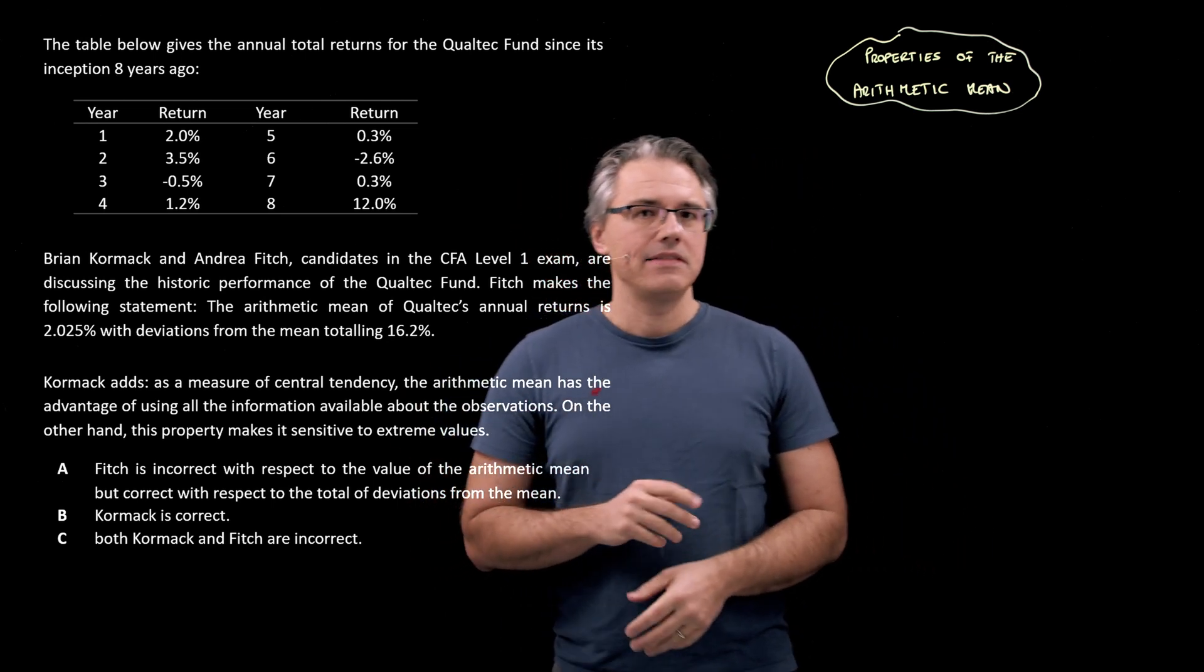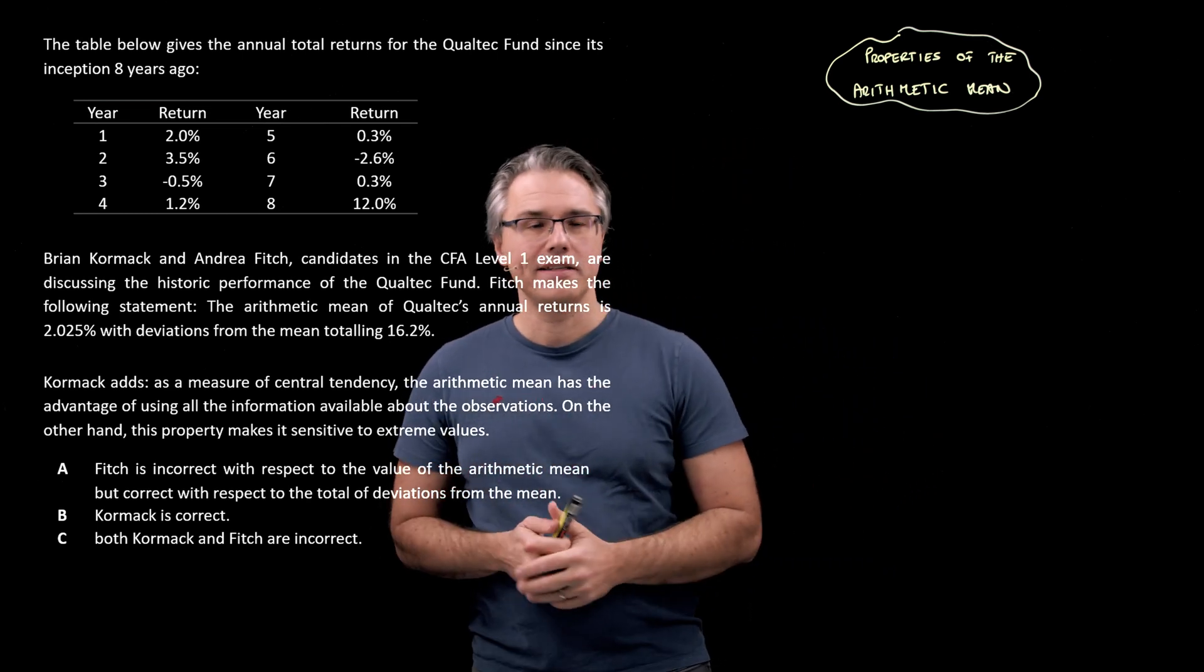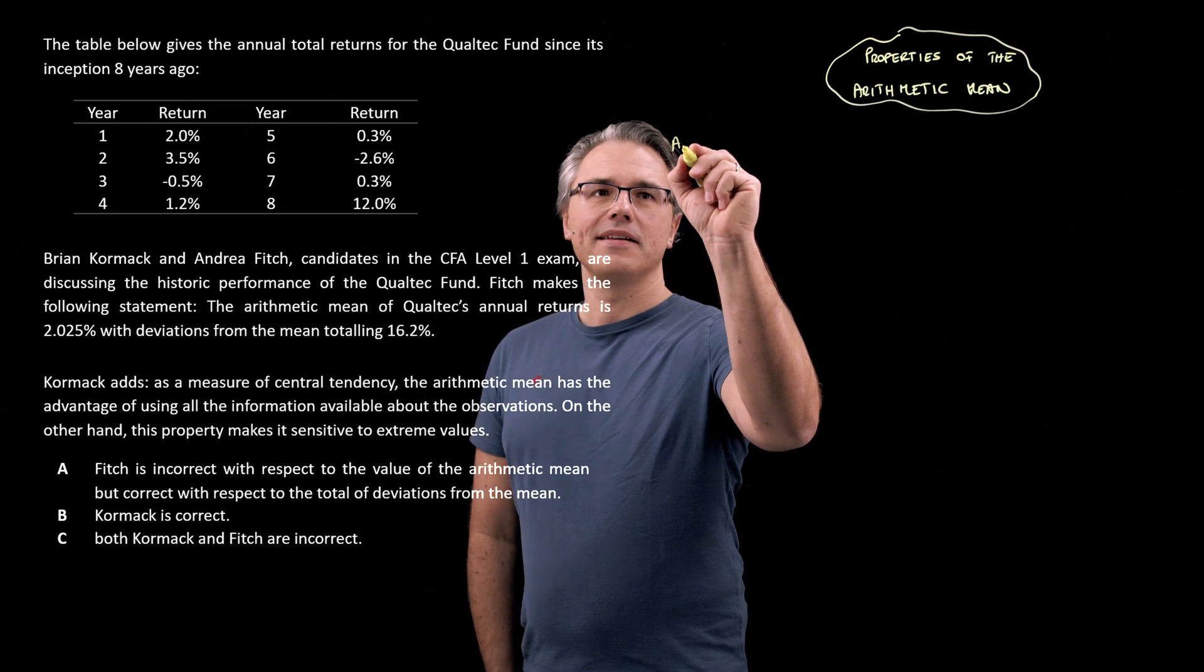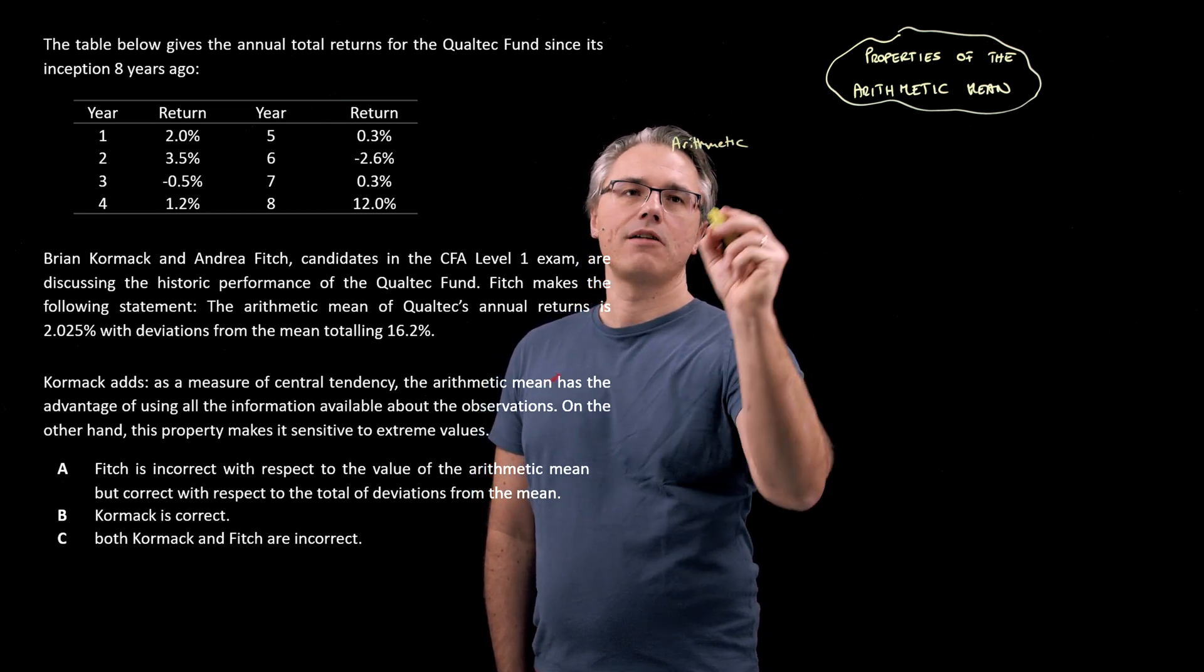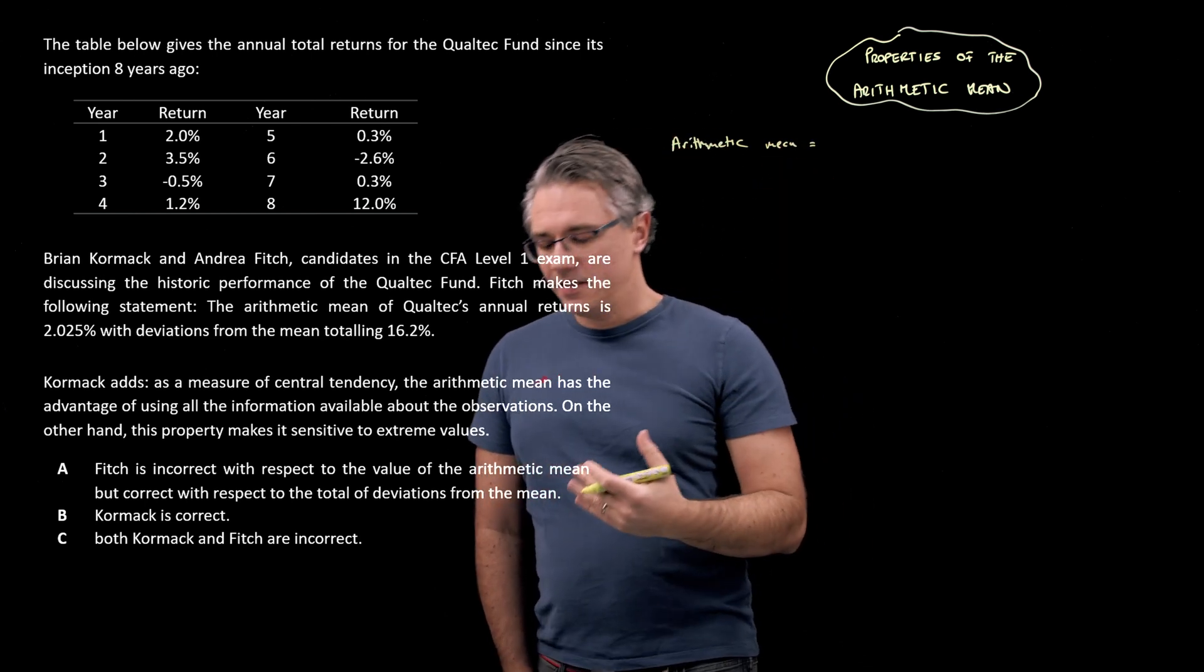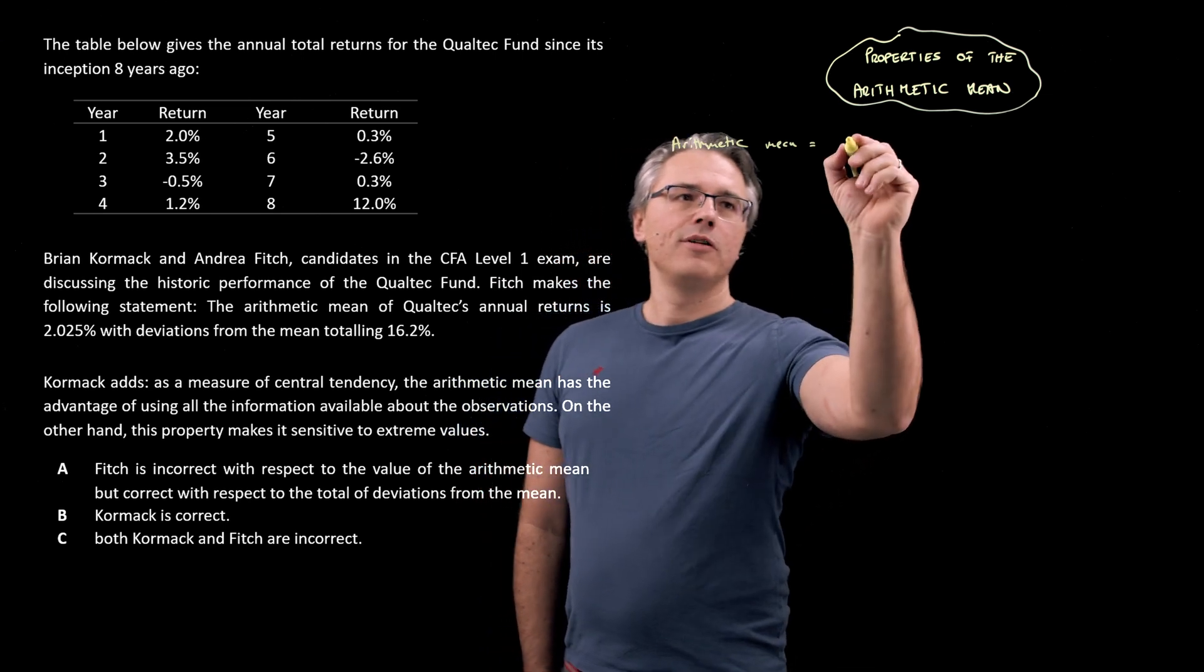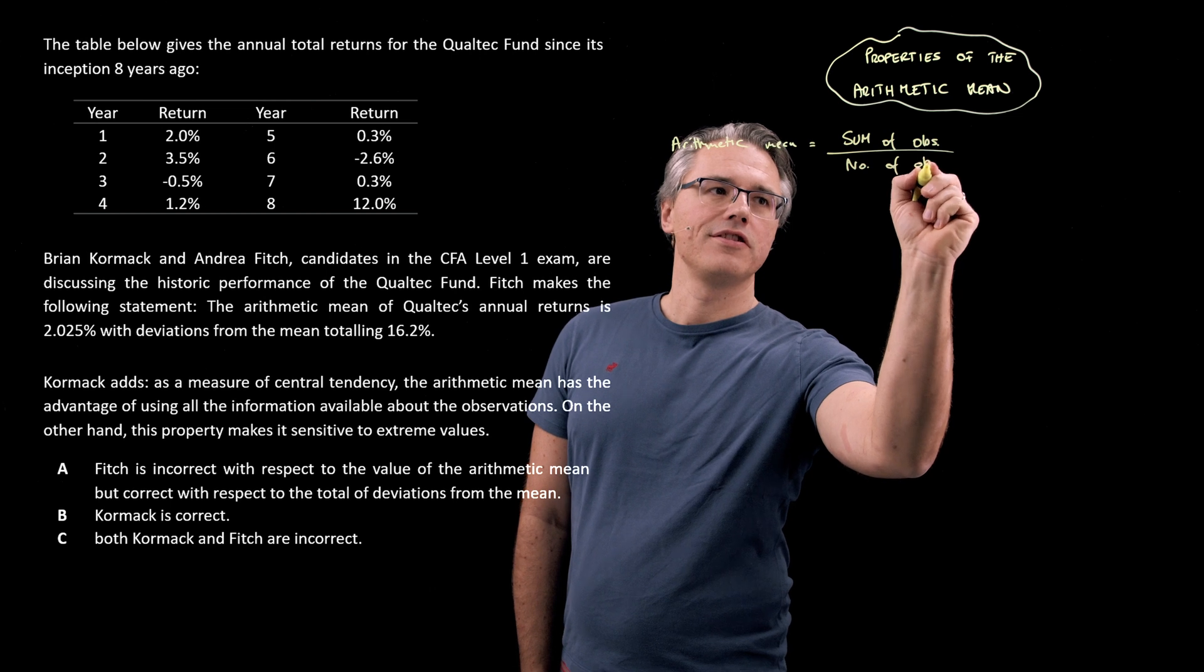I think the easiest thing to do is just to compute the arithmetic mean. The arithmetic mean is, as I said, the most basic measure of so-called central tendency. So arithmetic mean is simply the total, the sum of the observations, divided by the number of those observations.